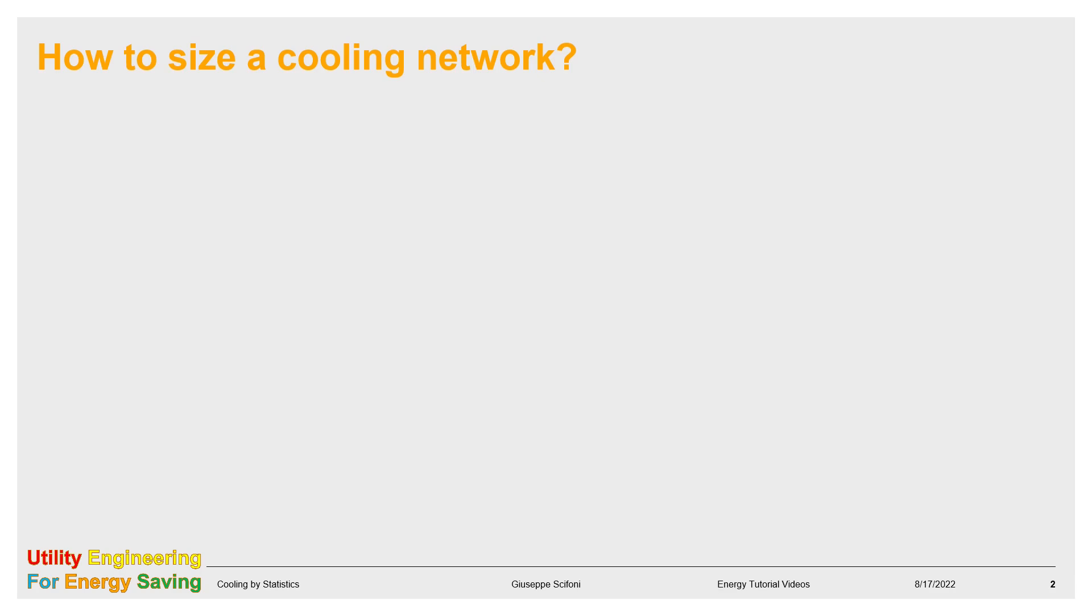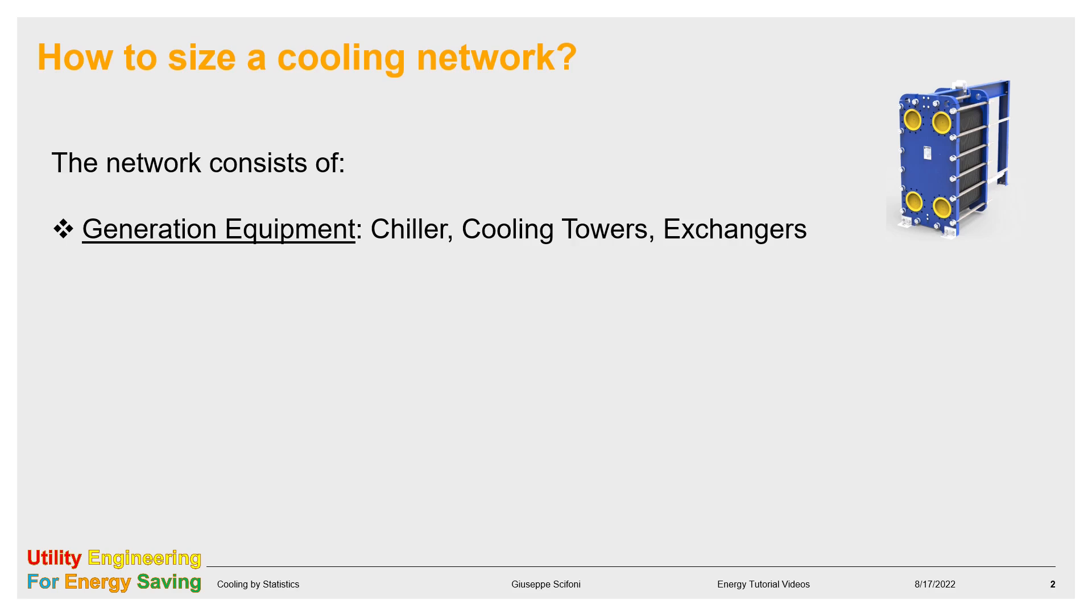A cooling network consists of four parts. First, the generation equipment, where the cold is produced and put at disposal. They can be chillers, cooling towers, exchangers or any combination of them. At the second place we find the machines for transferring and storing the cold. They are pumps and tanks.